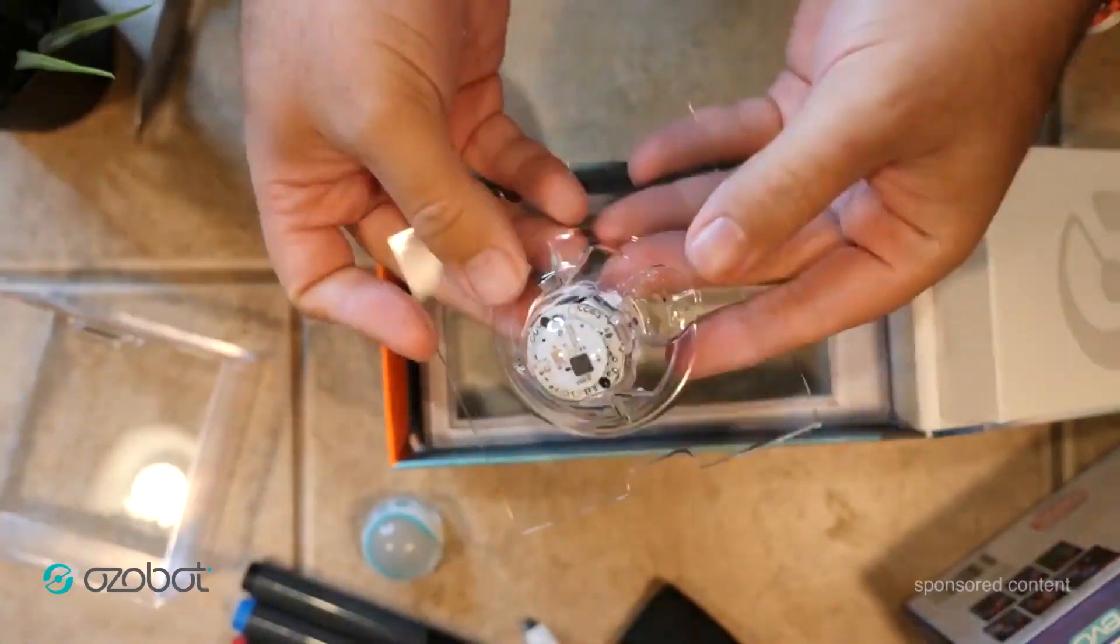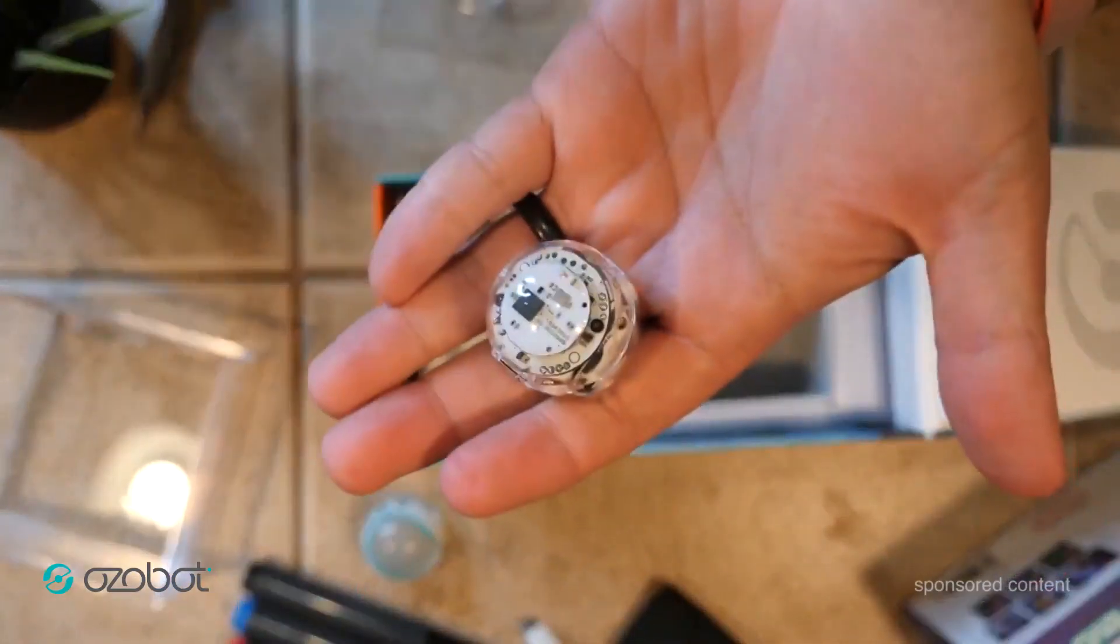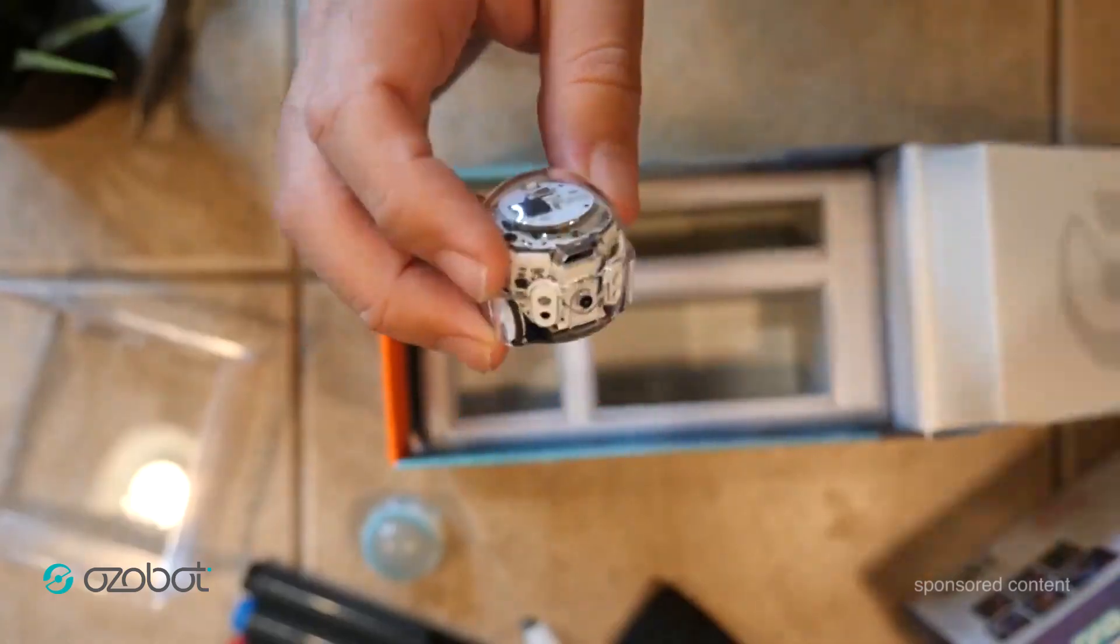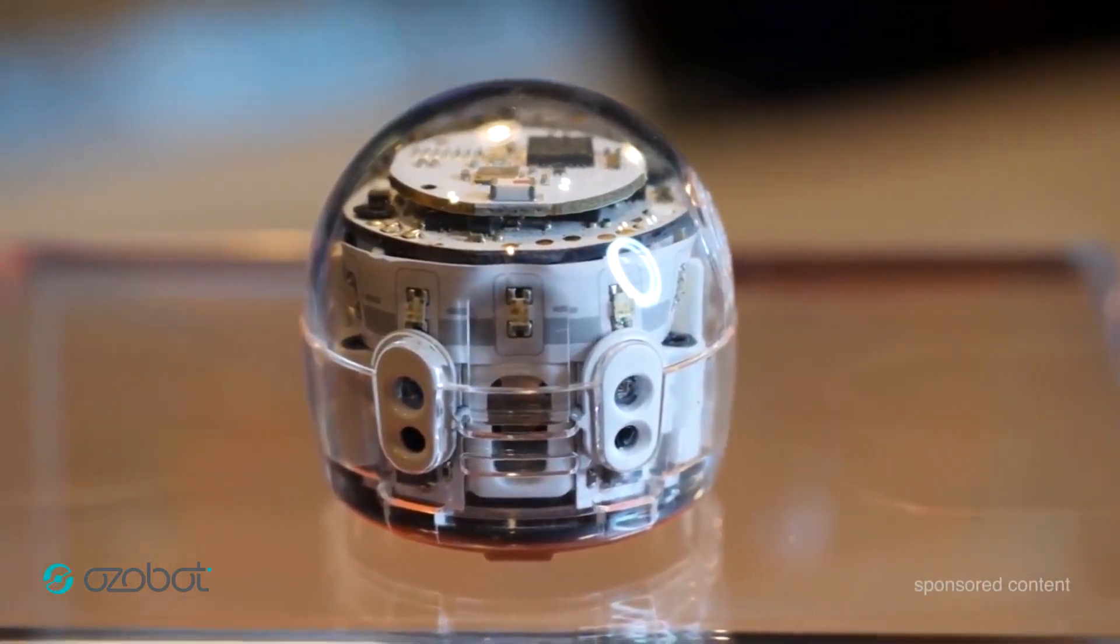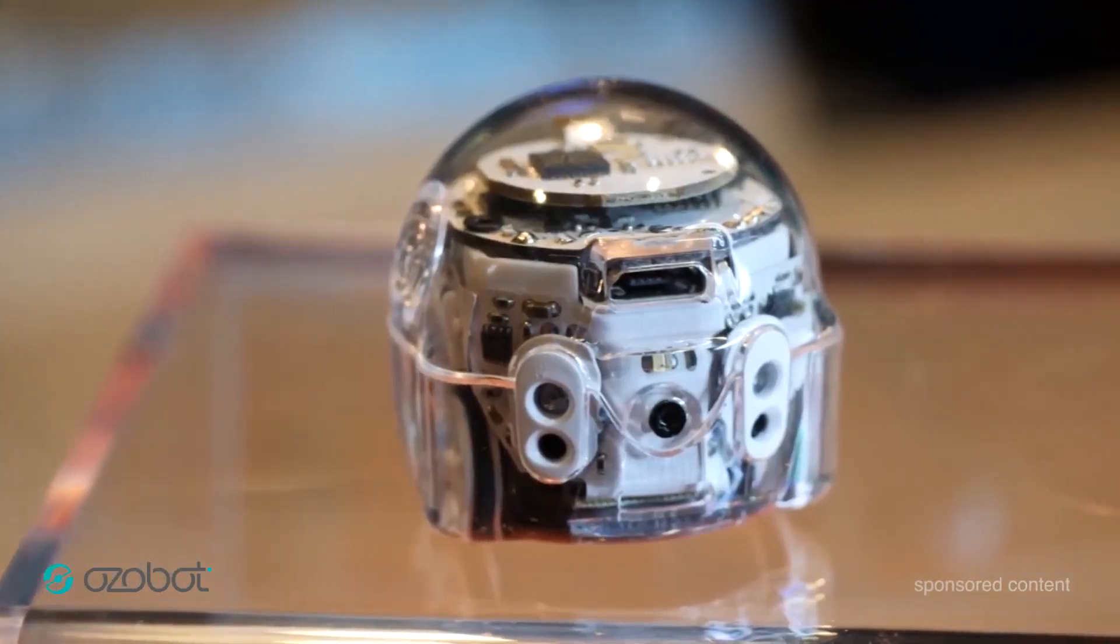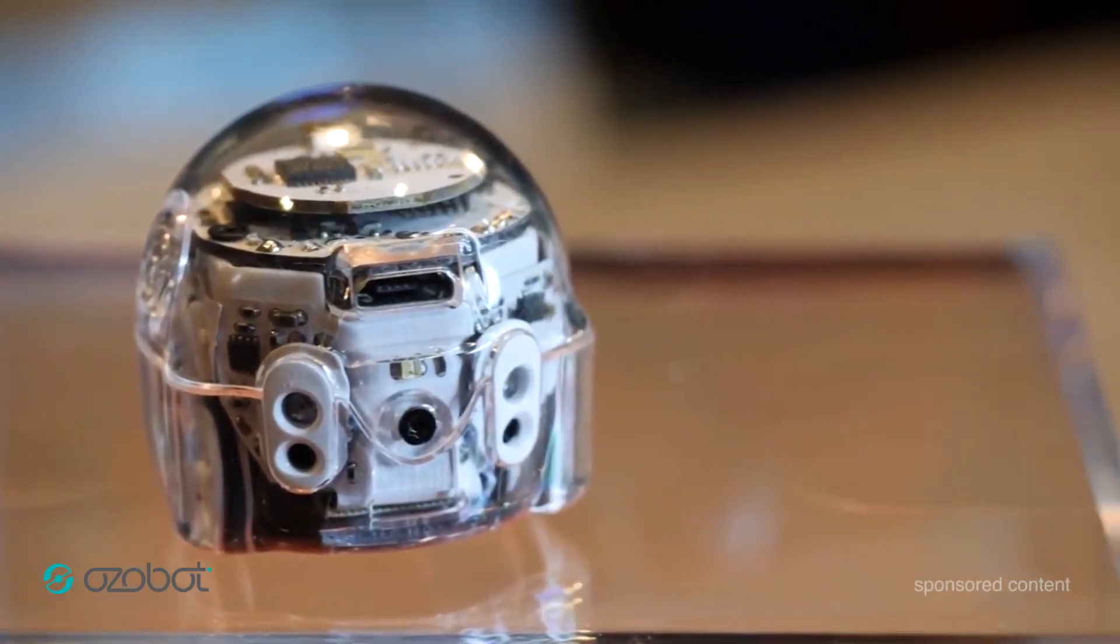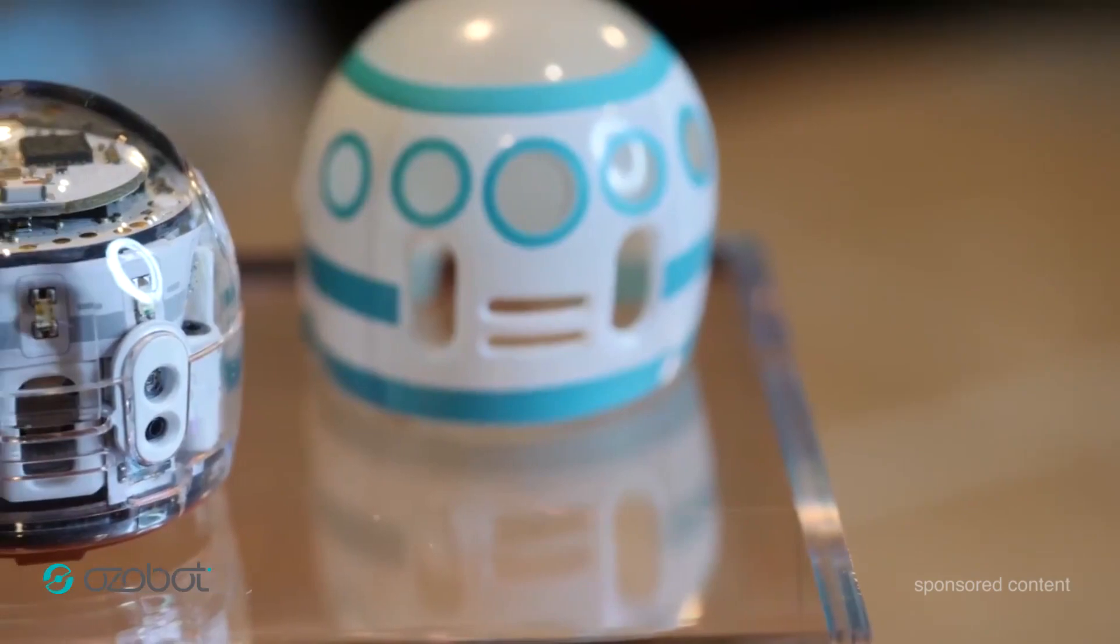The Ozobot Evo itself is packed with tech. It's got a hard polycarbonate shell, seven bright LEDs, micro USB for charging, built-in speaker, built-in Bluetooth. There's a lot going on inside this little guy, and you can even use different skins on it, like the one they included here.